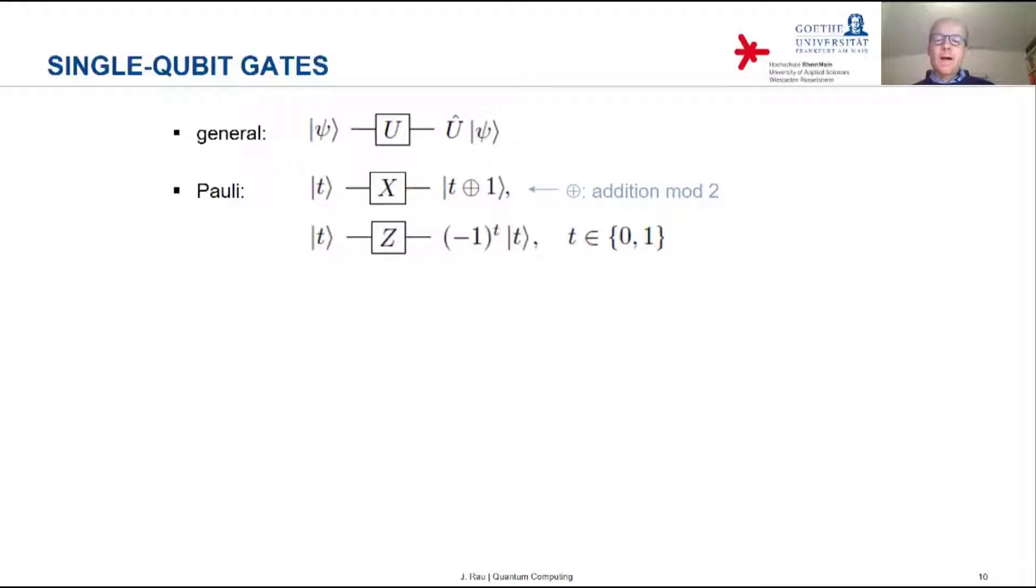Another example is the Pauli Z gate. The Pauli Z matrix is diagonal and it has entries one and minus one. So this means that the basis state zero is mapped to basis state zero, and the basis state one is mapped to minus basis state one. So the Pauli Z gate gives a factor minus one if we have basis state one. It's written in compact form as a prefactor (-1)^t. This is plus one if we have basis state zero and minus one if we have basis state one.